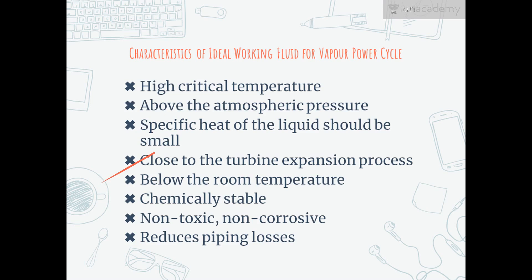The saturated vapor line of the TS diagram should be very steep, very close to the turbine expansion process, so that excessive moisture does not appear during the expansion. The freezing point of the fluid should be below the room temperature, so that it does not get solidified while flowing through the pipelines. The fluid should be chemically stable and should not contaminate the materials of construction at any temperature. The fluid should be non-corrosive, non-toxic, not excessively viscous and low in cost.